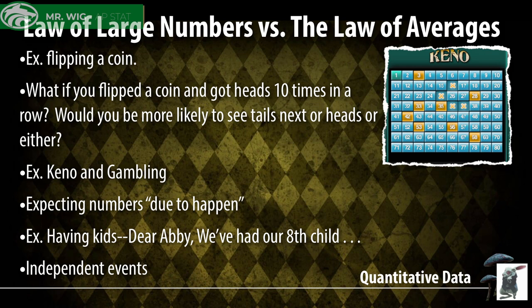If you think something is supposedly going to happen because of what's gone on in the past, that would be a dependent situation. If I'm going to pull a card out of a deck trying to find an ace, and I keep flipping cards without seeing aces, I am more likely to see an ace every time I flip a card and don't see one — because that is a dependent situation.